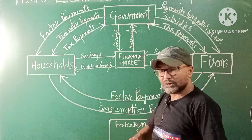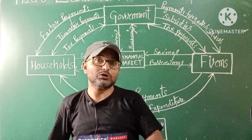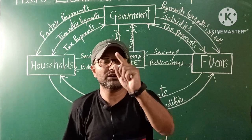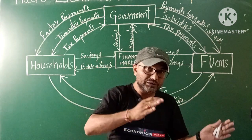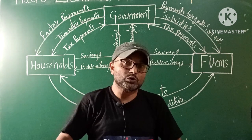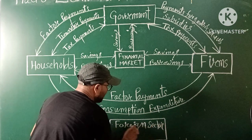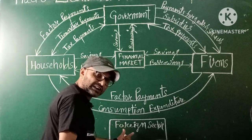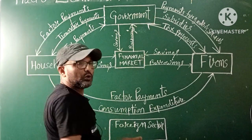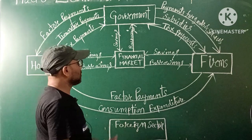So we have three sectors — household, firms, and government — that makes one, two, three. Now we will add one more sector: the foreign sector, also called the external sector. Today our important topic is the foreign sector and how it affects the circular flow of income.